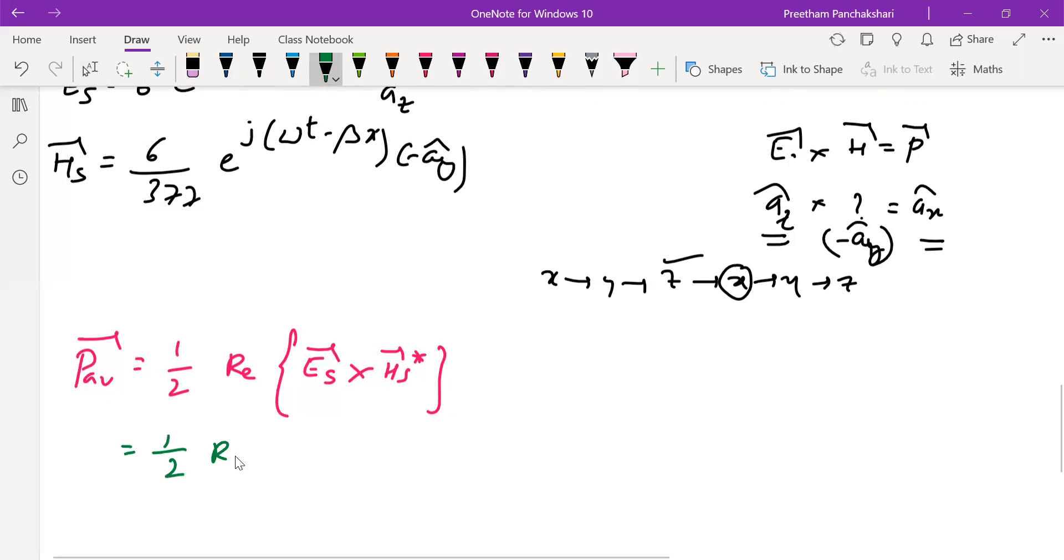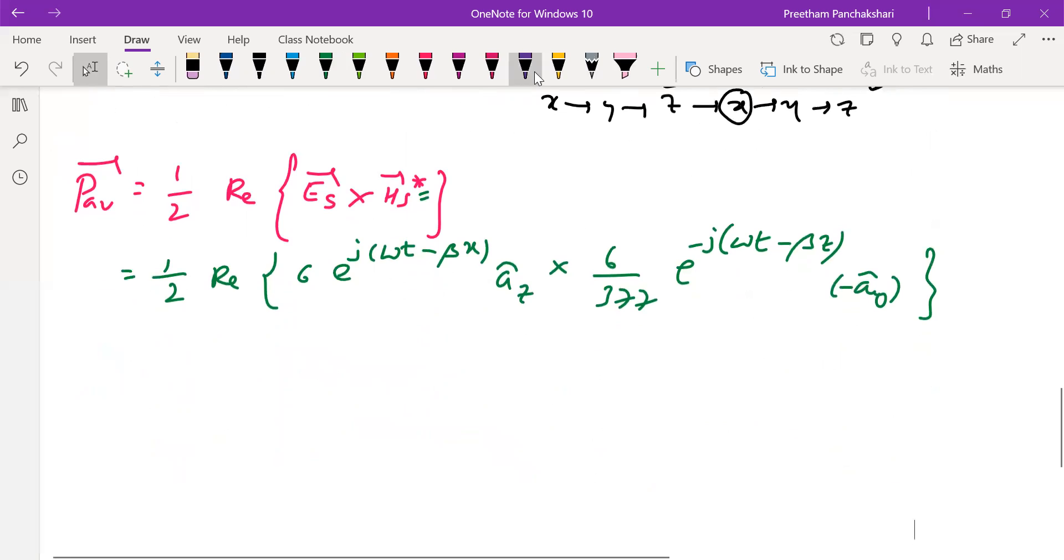Substitute here. E_s is 6e^j(ωt-βx) â_z cross product of 6/377. Look at the conjugate here. It is going to be e^-j(ωt-βx). And as per description, this is going to be â_y minus.